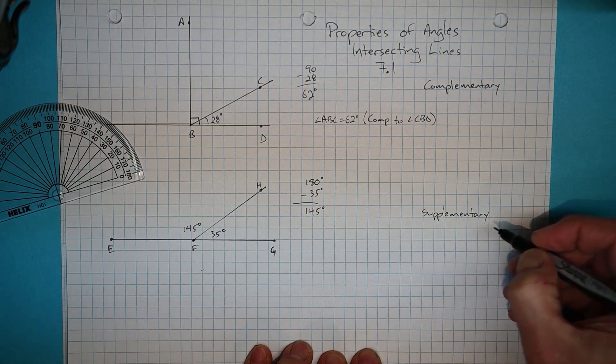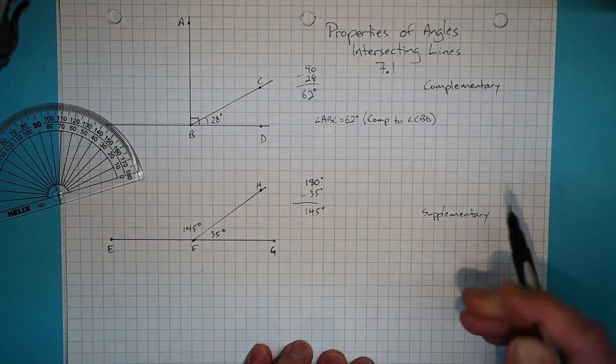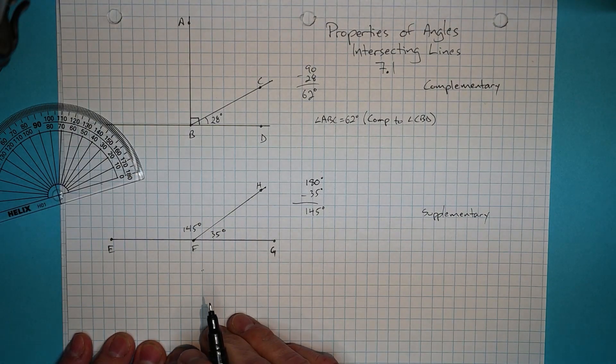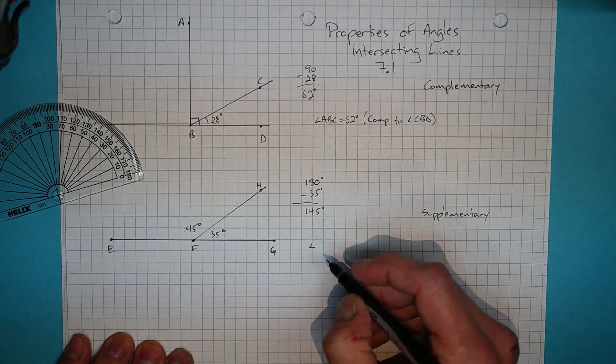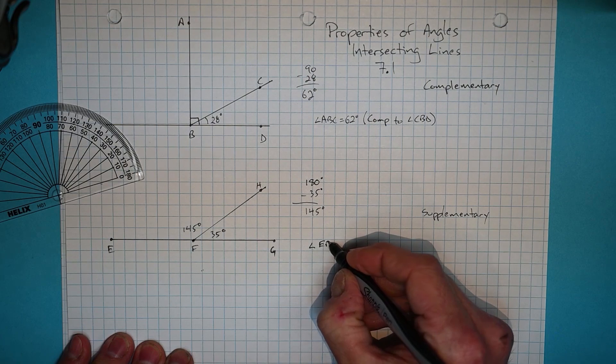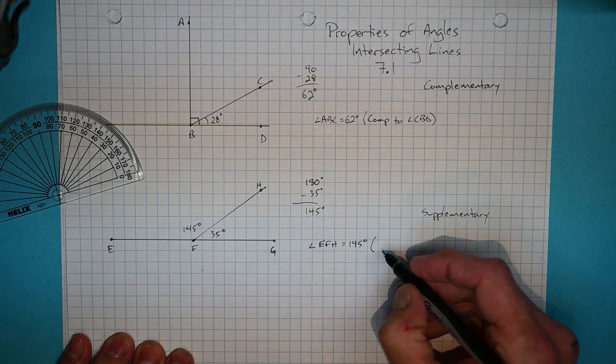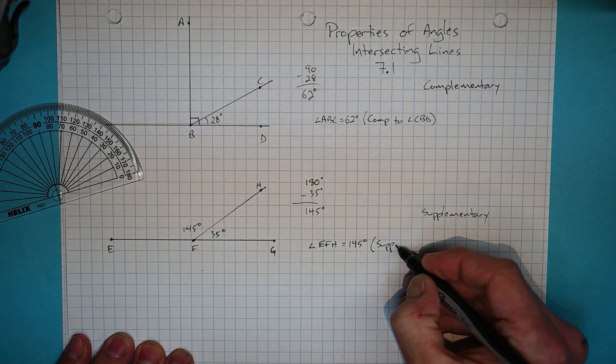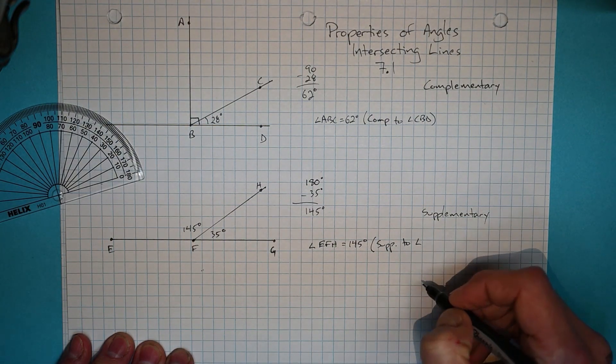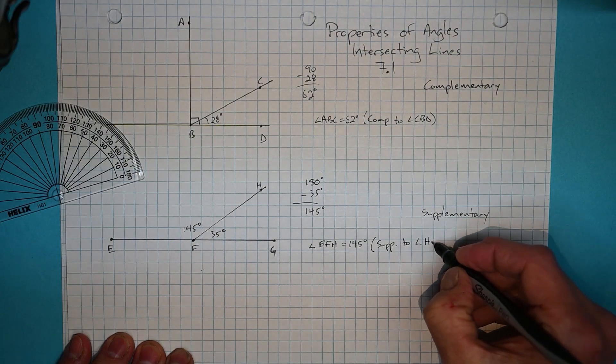So now we can say that angle EFH equals 145 degrees. And our reason is that it is supplementary to angle HFG, which was given.